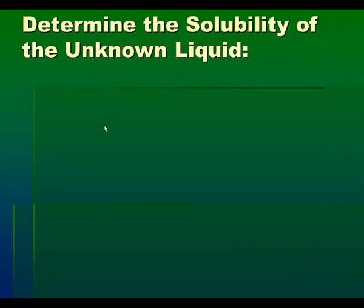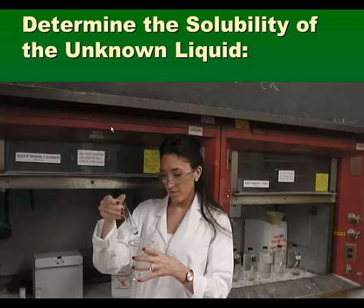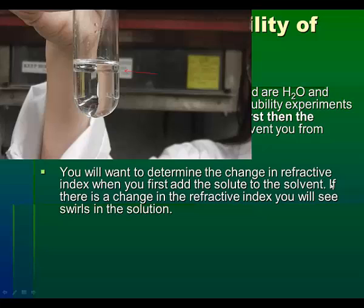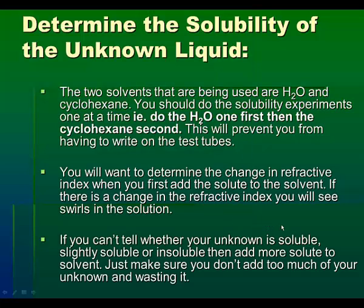Determine the solubility of the unknown liquid. You'll be determining whether the solute is soluble, slightly soluble, or completely insoluble in the two solvents: water and cyclohexane. Do the solubility experiments one at a time — water first, then cyclohexane second. This will prevent you from having to label the test tubes. When you first add the solute to the solvent, determine the change in refractive index. If there is a change, you will see swirls in the solution. If you can't tell whether your unknown is soluble, slightly soluble, or insoluble, add more solute to the solvent — but don't add too much and waste your unknown.